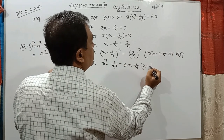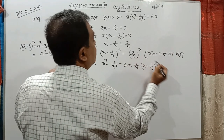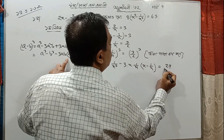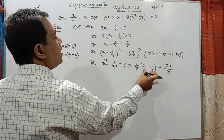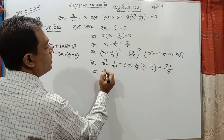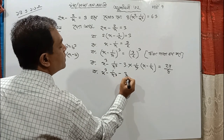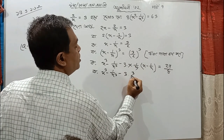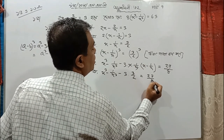And x minus 1 by x. The answer is 3 cube, which is 27, and 2 cube, which is 8. If we cut this out, we will have x minus 1 by x. And the answer is x³ minus 1 by x³ minus 3 times x minus 1 by x, which is 3 by 2, and the answer is 7 by 8.